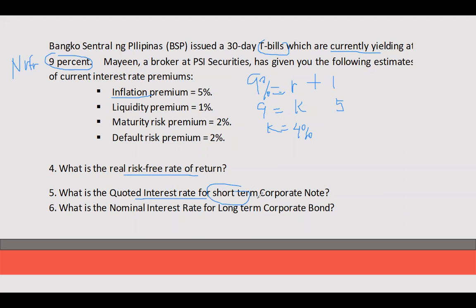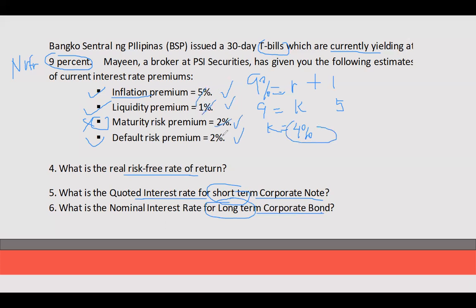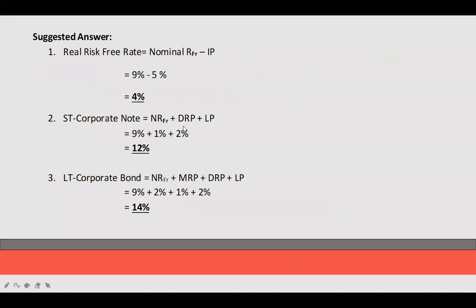What is the quoted interest rate for a short-term corporate note? Since it is a corporate note, it has inflation premium, liquidity premium, and default risk premium, but no maturity premium because it is short-term. So: 4 plus 5 equals 9, plus 1 (liquidity) equals 10, plus 2 (default) equals 12%. For a long-term corporate bond, add inflation, liquidity, maturity, and default: 4 plus 5 plus 1 plus 2 plus 2 equals 14%. The answers are: 4% real risk-free rate, 12% for short-term corporate note, and 14% for long-term corporate bond.